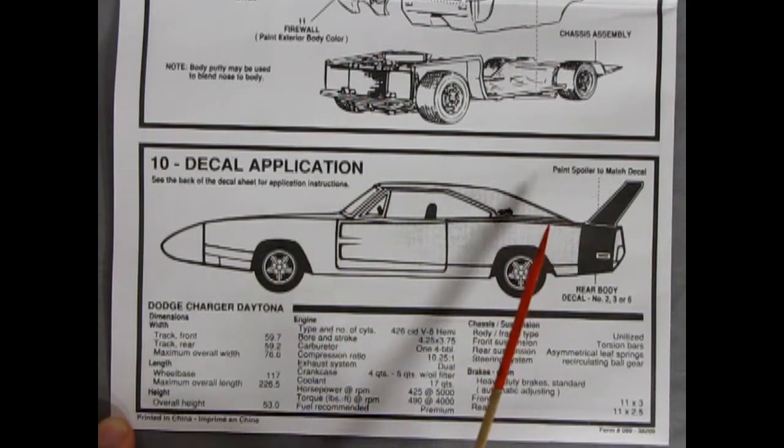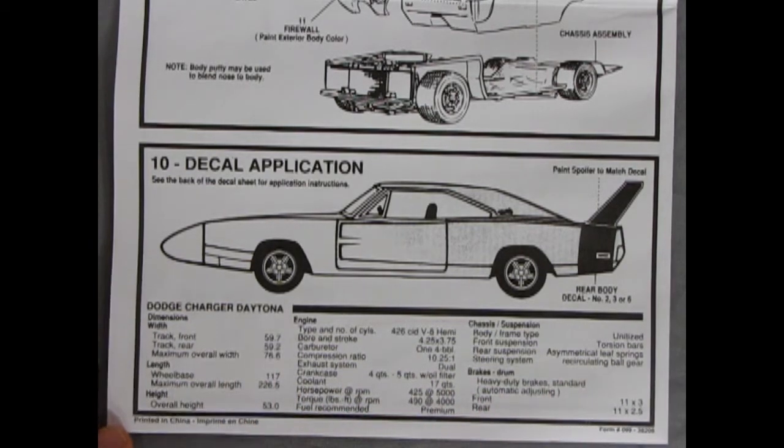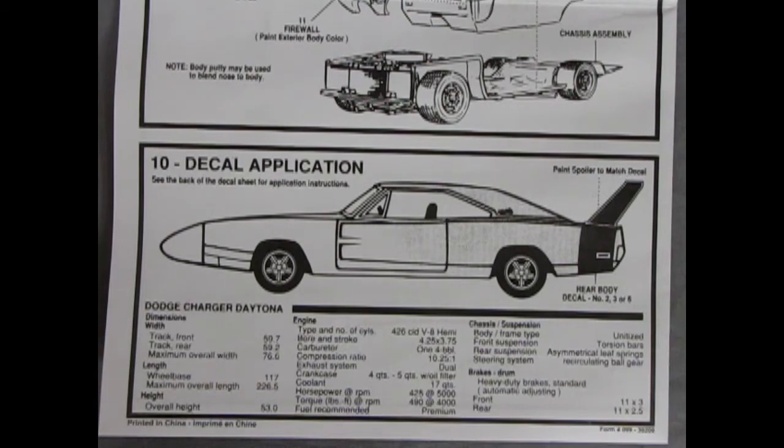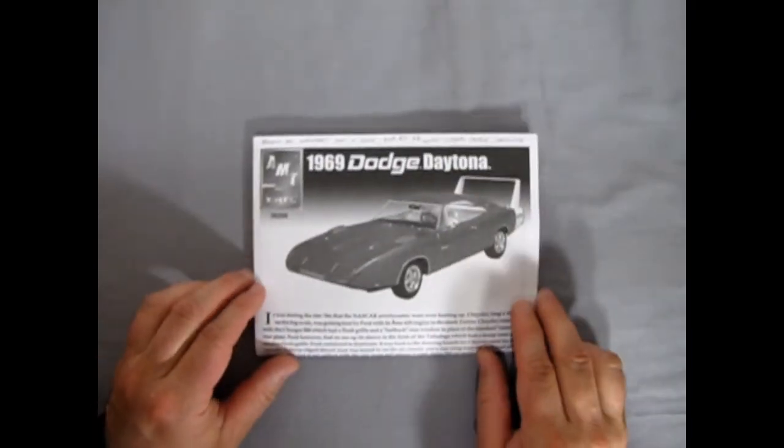Panel 10 shows our decal application. See the back of the decal sheet for application instructions. You get the rear stripe here in three different colors and you paint your spoiler to match the decal. There's also all the statistics and information on the Dodge Charger Daytona down here, such as the dimensions, the engine, the length, the height, chassis and the brakes. Quite a lot to read and inform yourself of the Daytona.